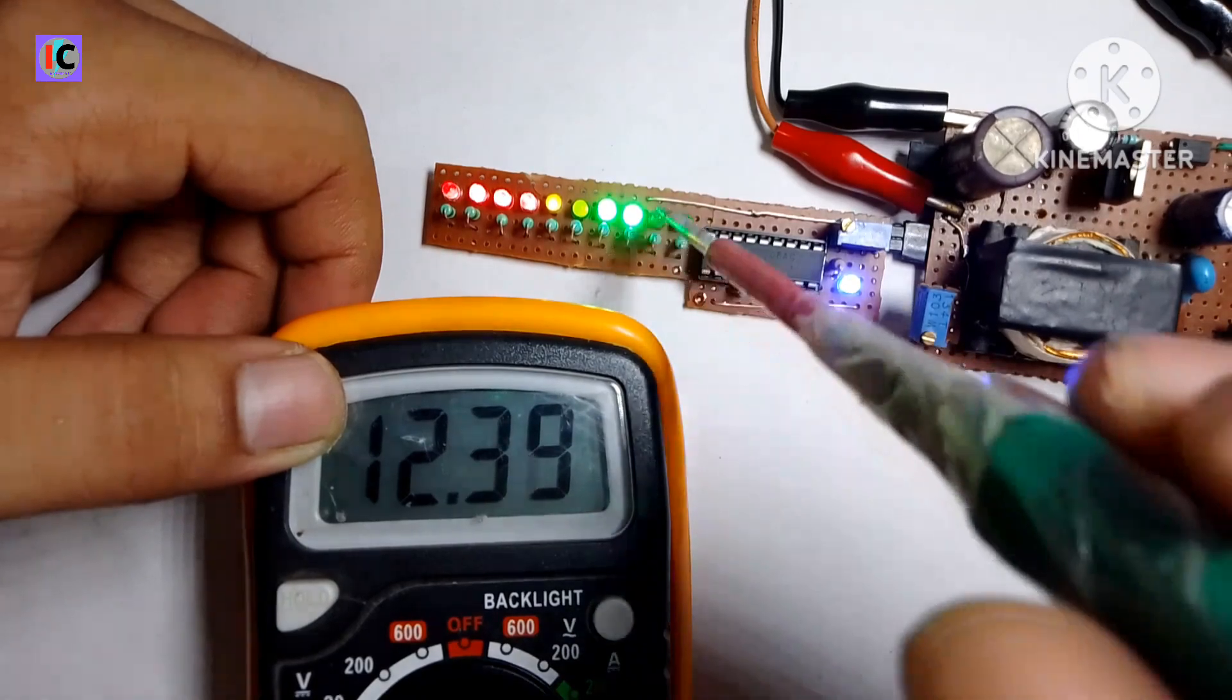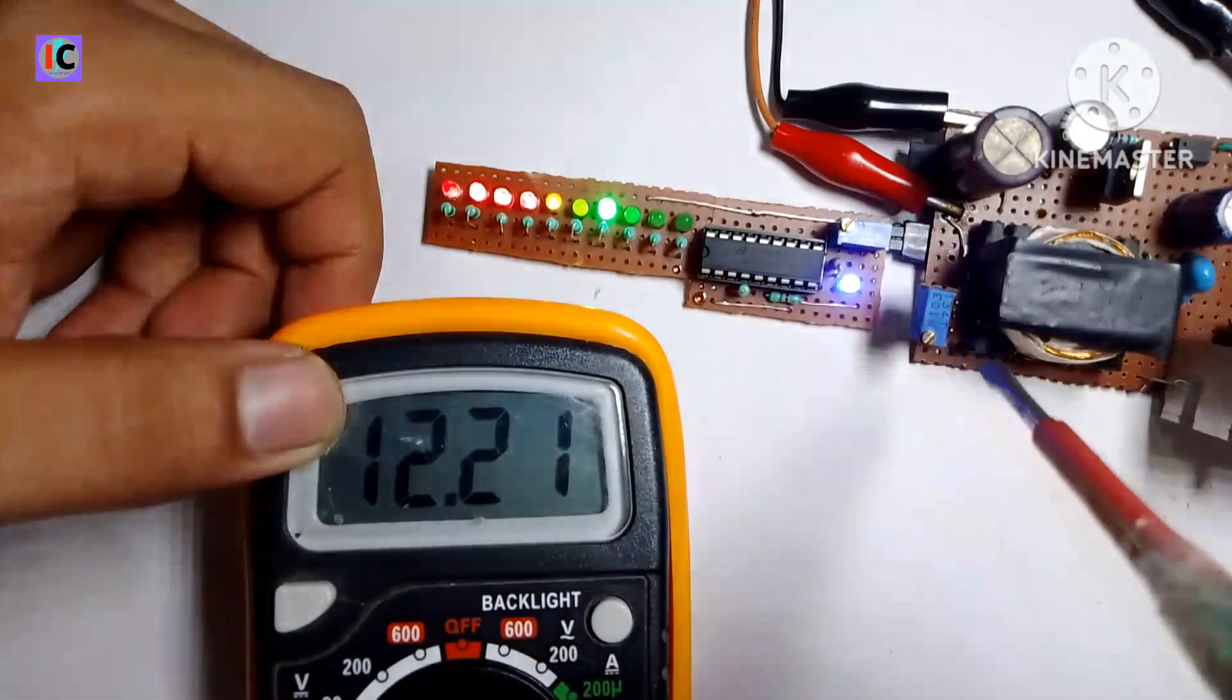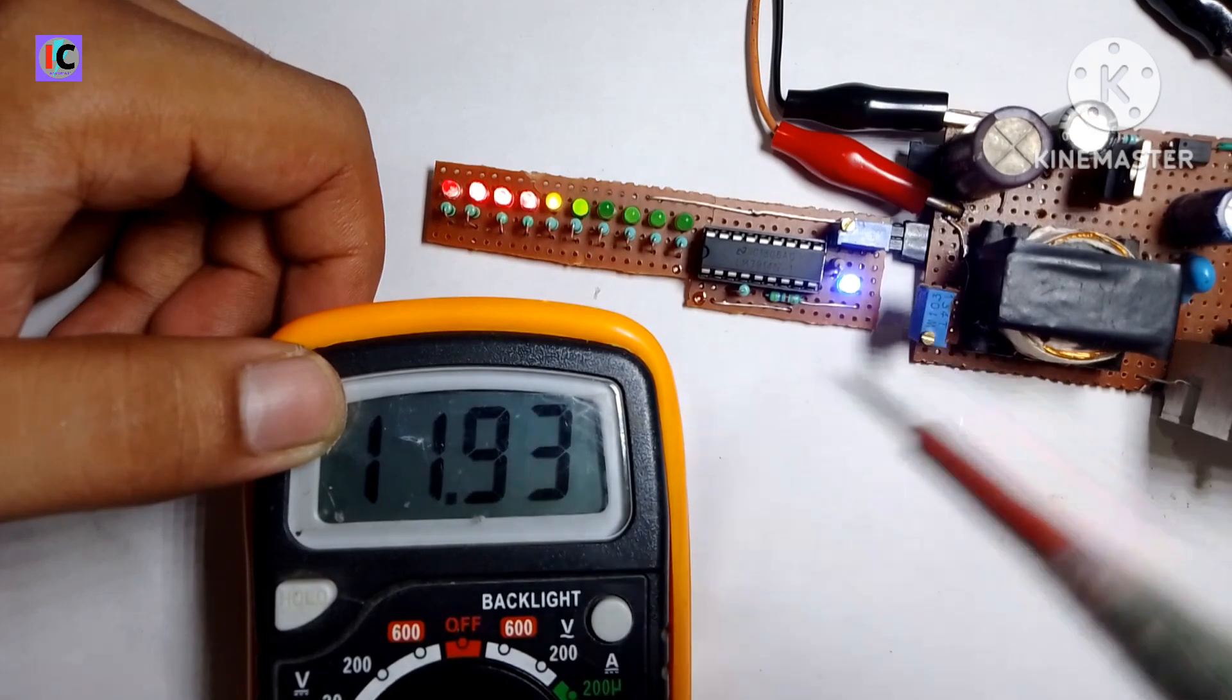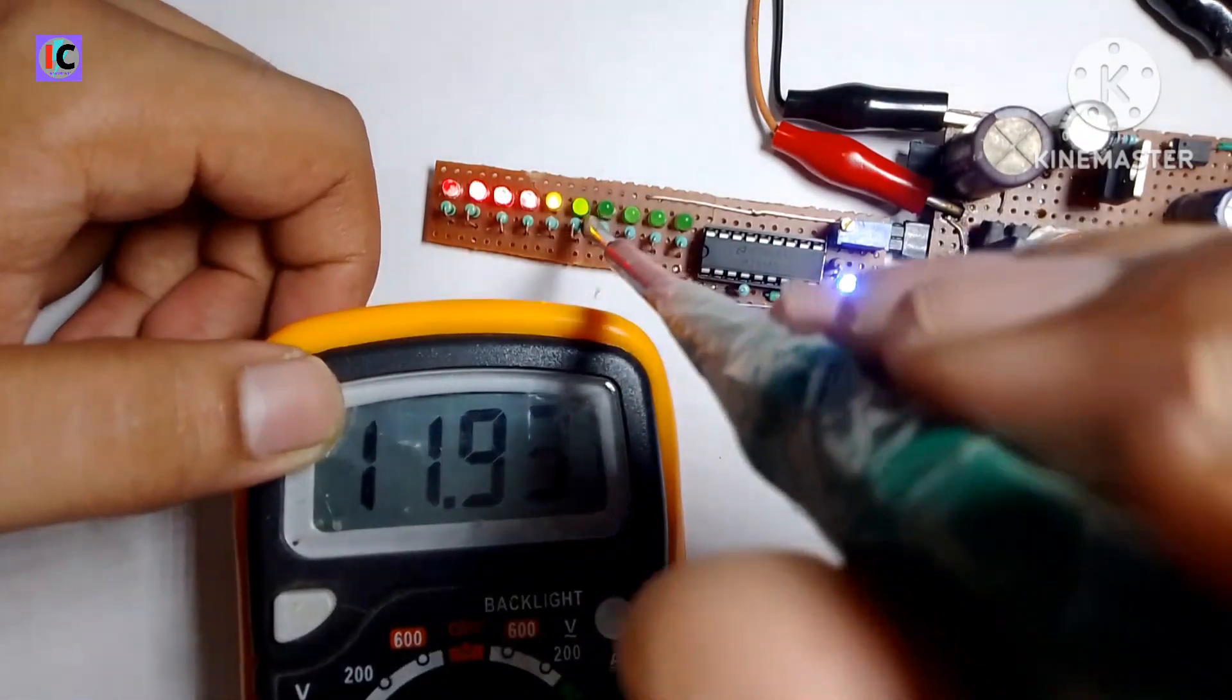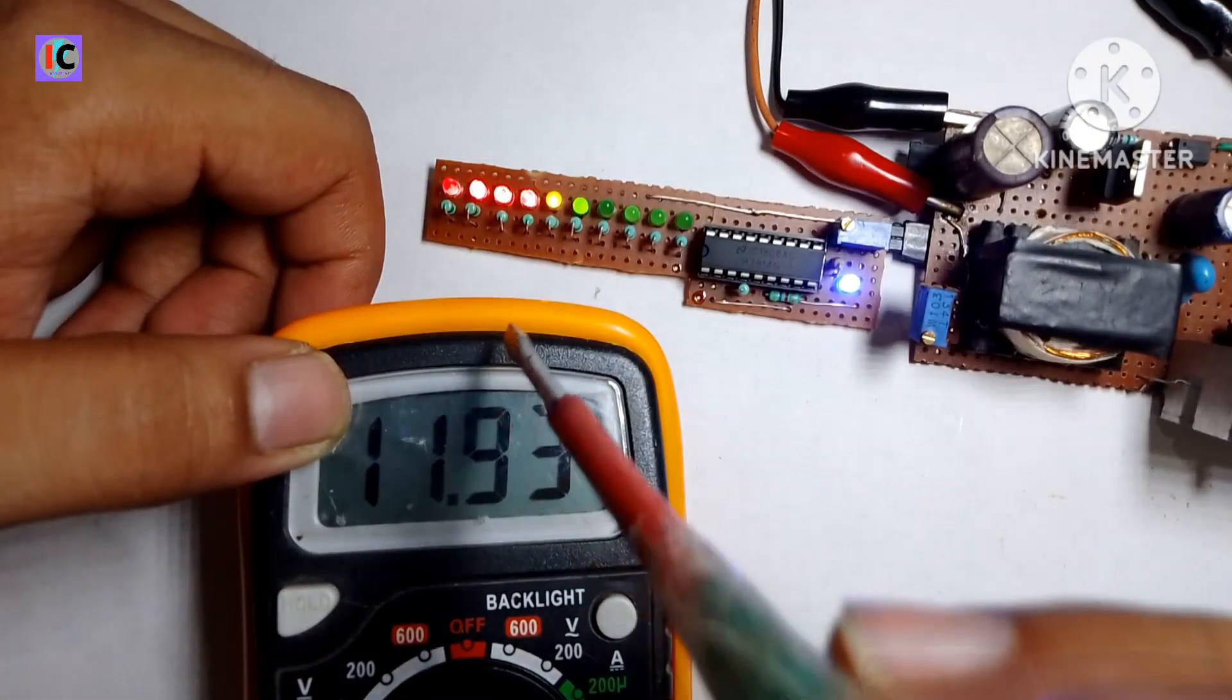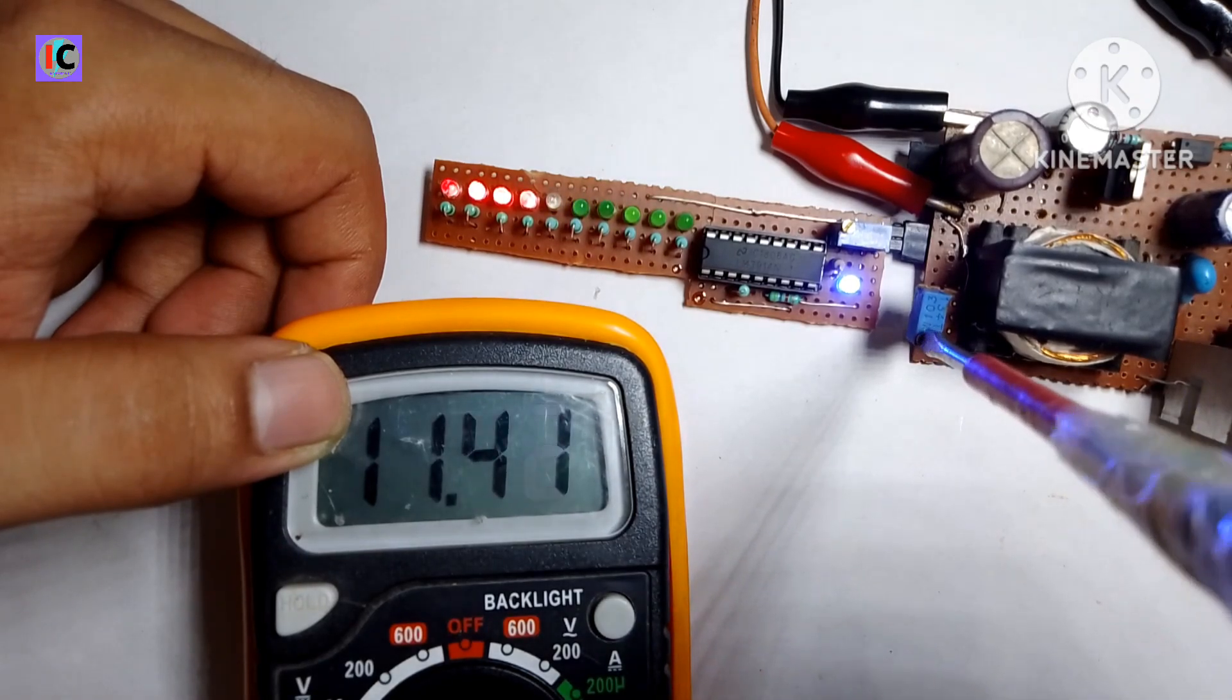As I decrease the voltage by the module, the indication on the indicator module also indicates accordingly. At almost 12 volts the battery becomes almost half charge, so the half portion of the LEDs are still glowing.